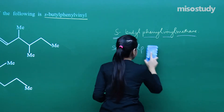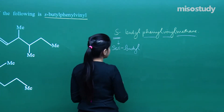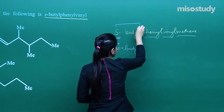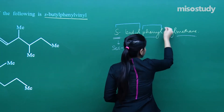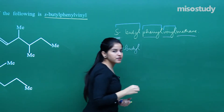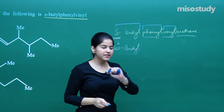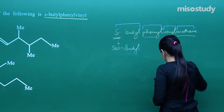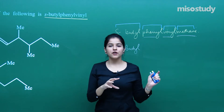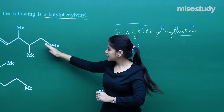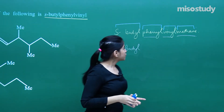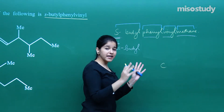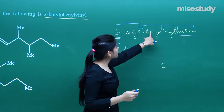Basically, these are the substituents — substituent, substituent, and substituent. What is the word root? The word root is just one carbon atom — that is methane. So if I try to form the formula, I'll be matching up the options. 'Meth' means one carbon atom attached to how many substituents? One, two, three.